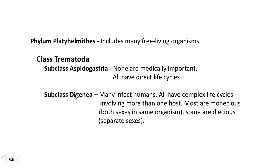There are two kinds of diogenian trematodes. Most of them are monoecious — as the term implies, they are organisms that contain both sex cells, both sex organs, and they can self-fertilize in some cases. And then there are the dioecious version of diogenian trematodes, in which case the sexes are separate. We'll see, with the schistosomes, that that is indeed the case.